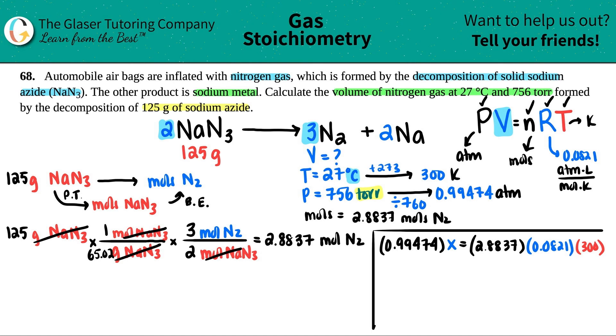And looks like I want to solve for X. So I'm just going to divide on both sides by the 0.99474. This cancels out. We're left with X. And remember, X is the volume. So 2.8837 times 0.0821 times 300 divided by 0.99474. This is where we're going to be looking for sig figs. Three sig figs to me. Does anybody care? No. But 71.4. Remember, the L value, or liters, is the volume. So when you're doing this, this has to be in liters. So 71.4 liters of N2. And there you go.